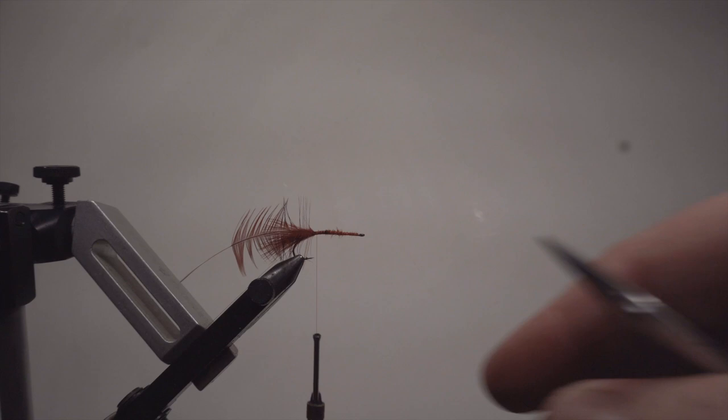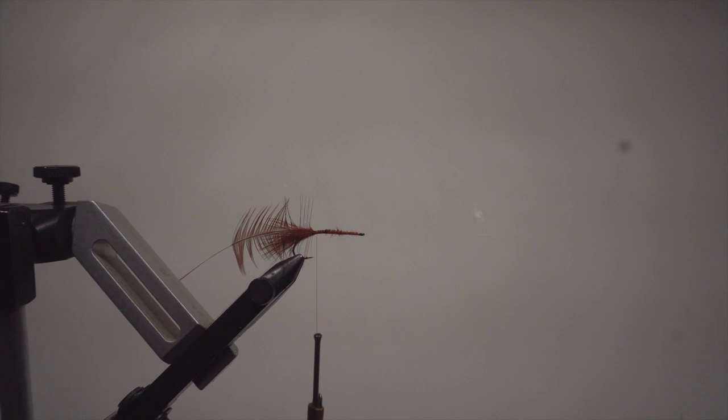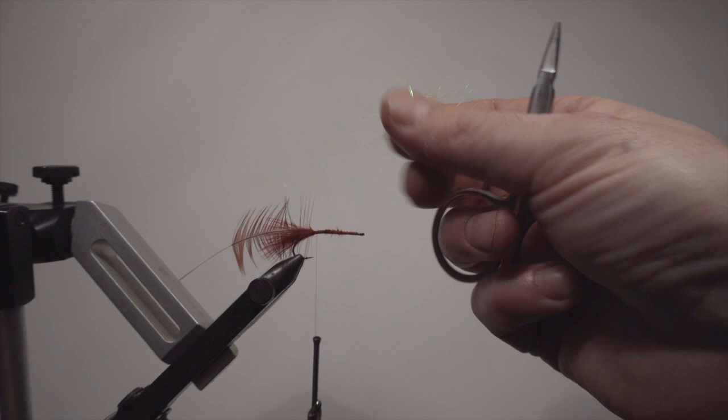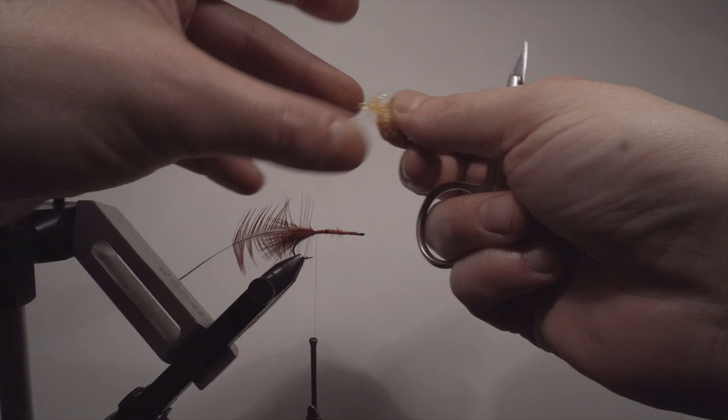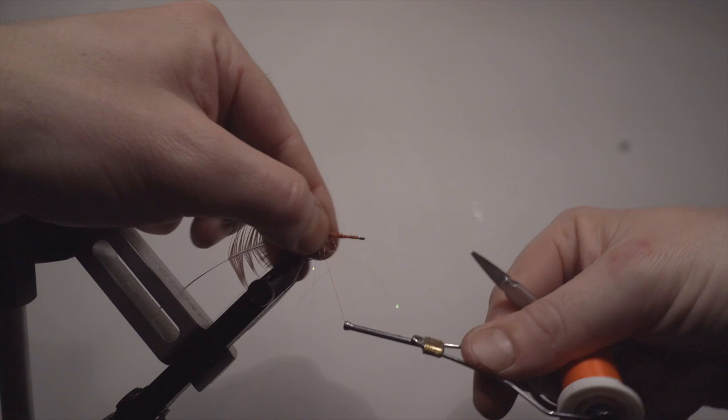And now we're into the dubbing. I'm going to use first Fire Orange Salmon Signature Dub as a little hot spot. This is quite long fiber, so sometimes I cut it and then I roll it around a little bit between our fingers, adding it here. Then just make it spin around.